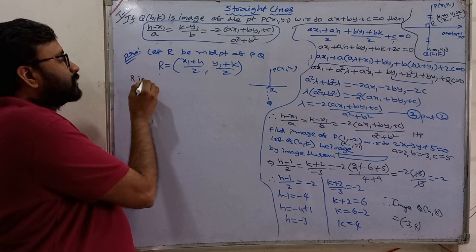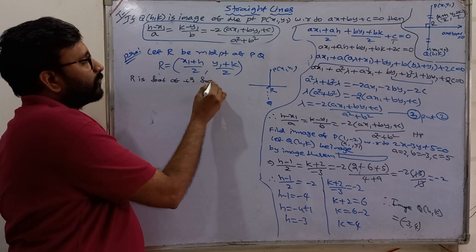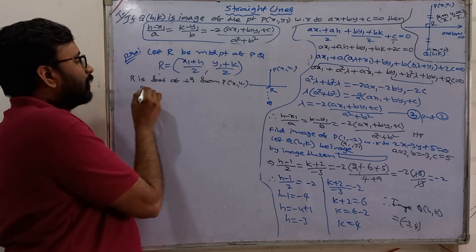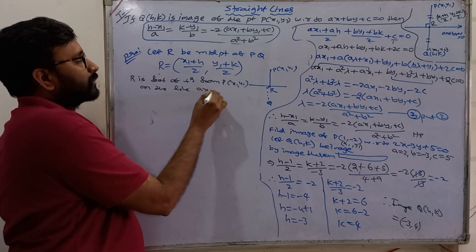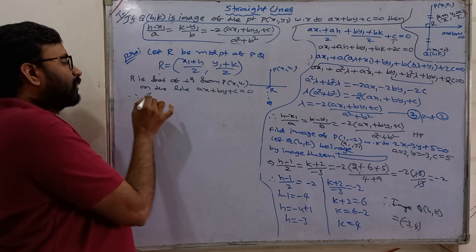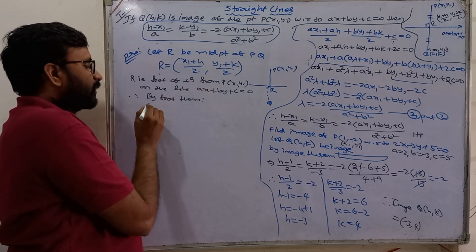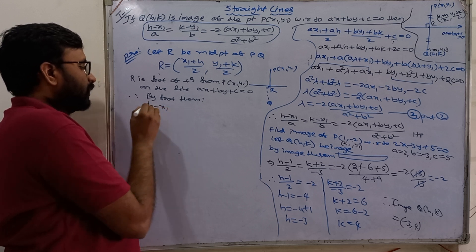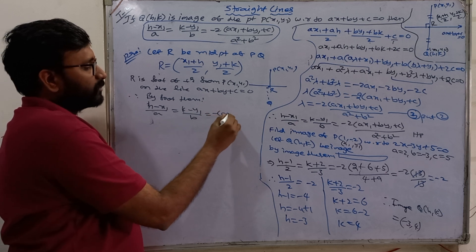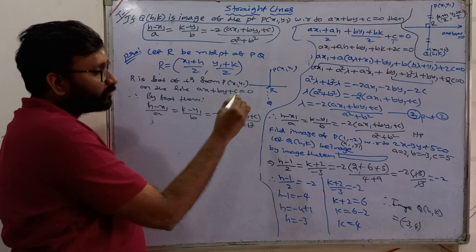R is foot of perpendicular from P(x1, y1) on the line AX plus BY plus C equal to 0. Therefore, by foot theorem. H minus X1 by A equal to K minus Y1 by B equal to minus of AX1 plus BY1 plus C by A square plus B square. It is foot theorem.